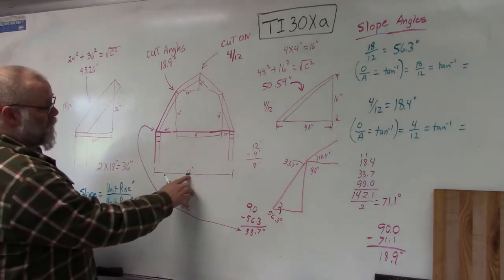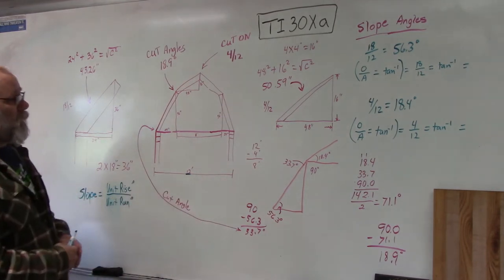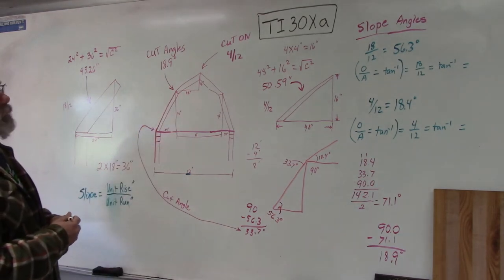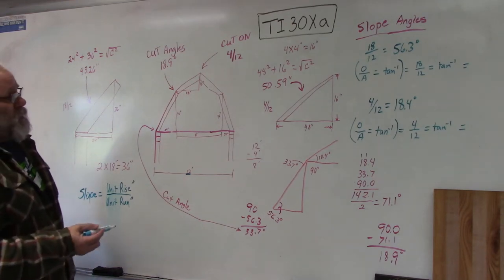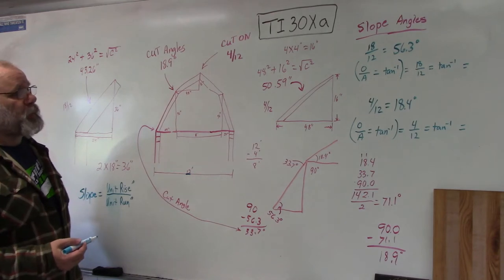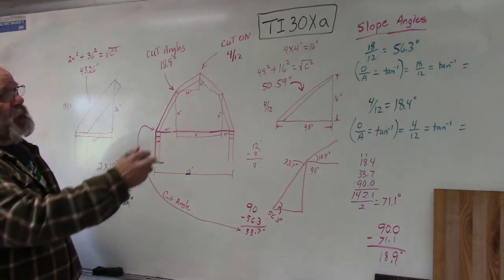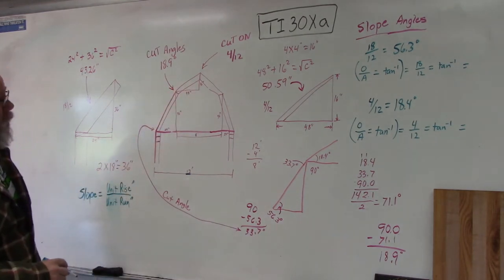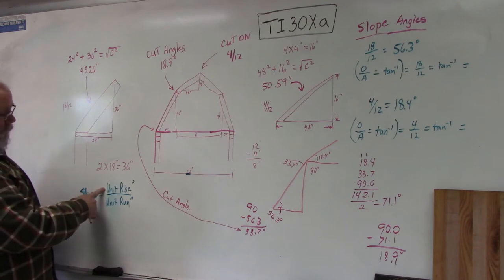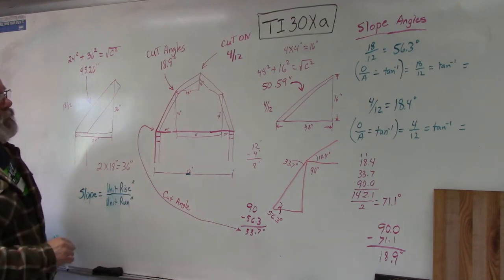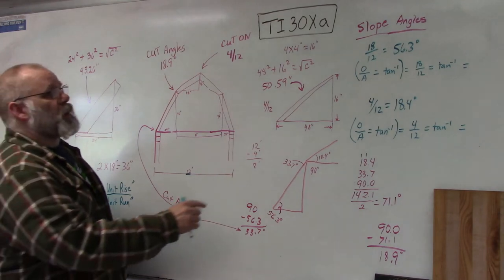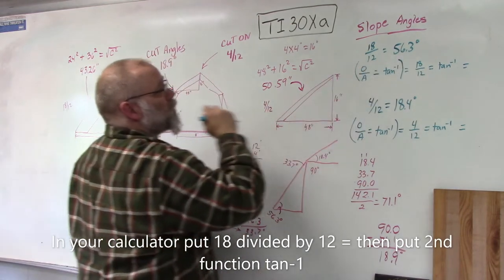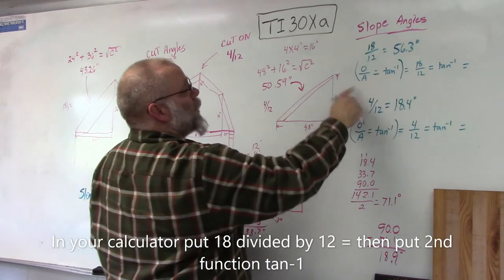When figuring out this first rafter, you can use whatever slopes you want. I'm figuring mine on 18/12 for the lower and 4/12 on the upper. The slope just means it's the unit rise over the unit run in inches. Over here I show my slope angles - I have an 18/12 that figures out to be 56.3 degrees.